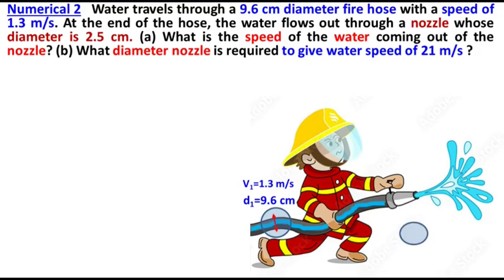At the end of the hose, the water flows out through a nozzle whose diameter is 2.5 centimeters. Part a: What is the speed of the water coming out of the nozzle?